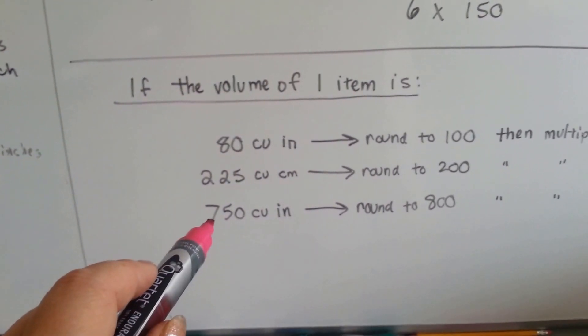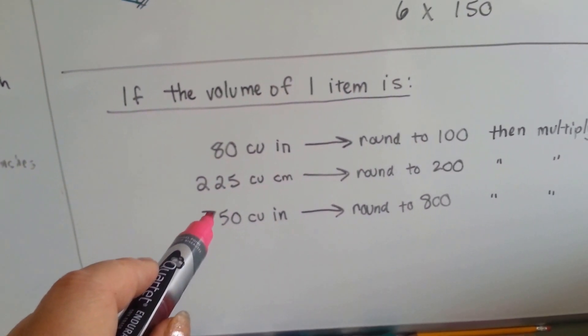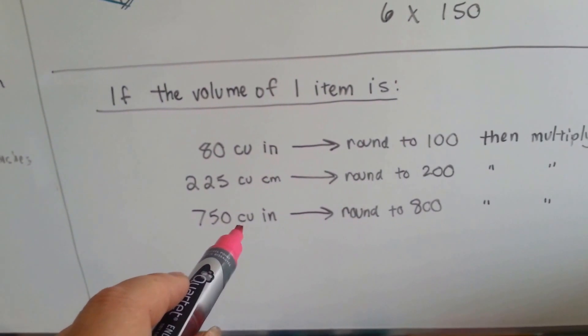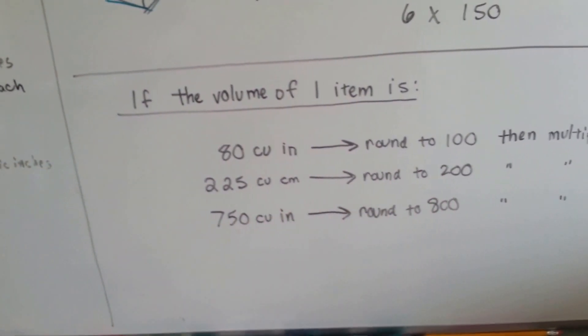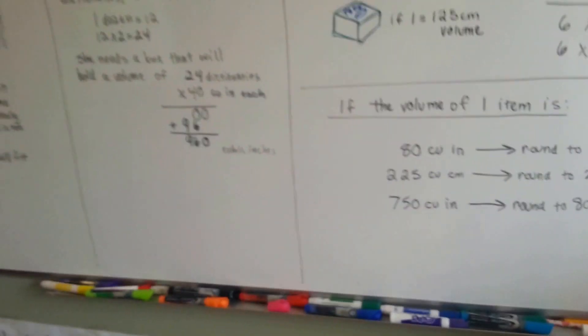If you had, let's say, four of them at seven hundred and fifty cubic inches, just round it to eight, and multiply four times eight. Just to do mental math, and estimate, and do it quicker.